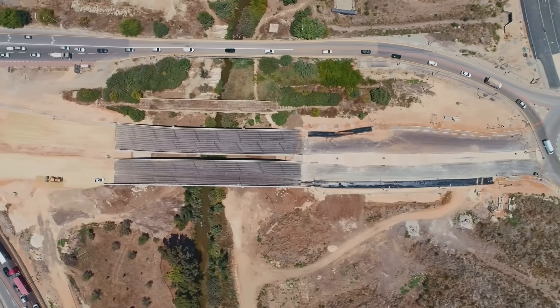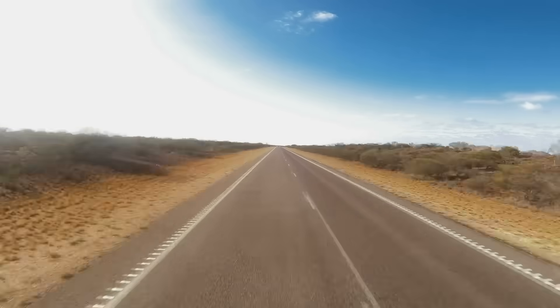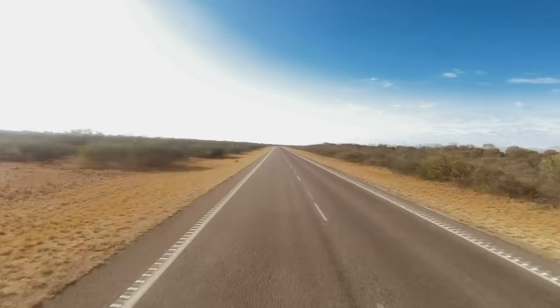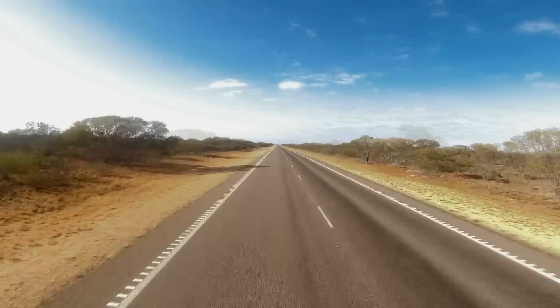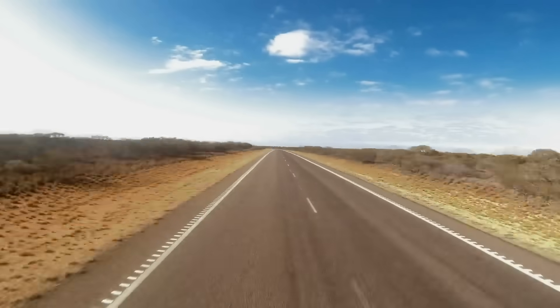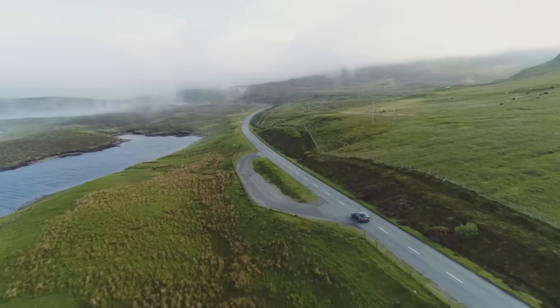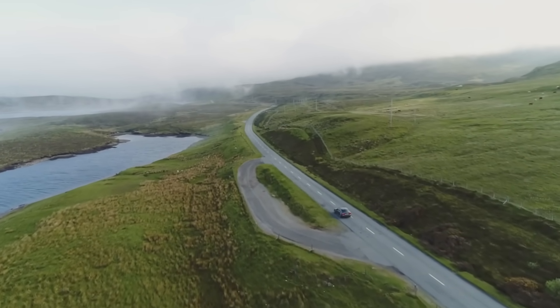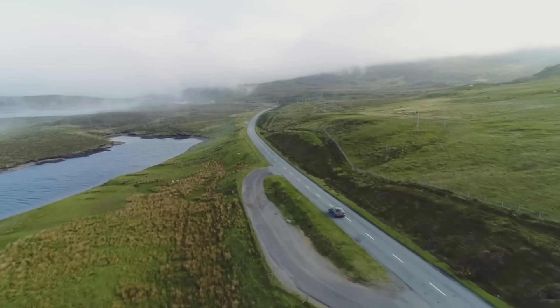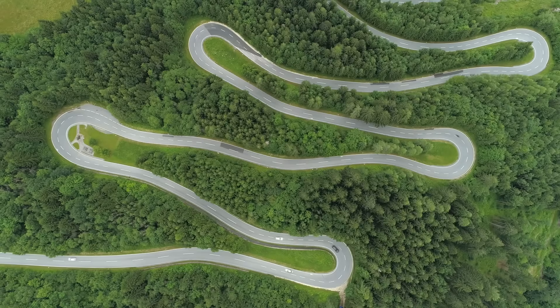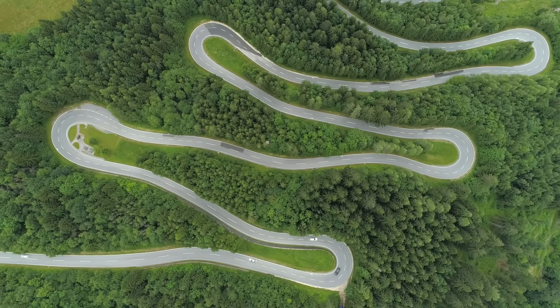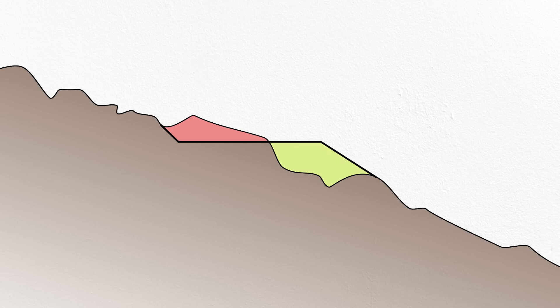Imagine you're designing a brand new roadway to connect point A to point B. It would be nice if the landscape between these points was perfectly flat, with no obstructions or topographic relief, but that's rarely true. More likely, on the way, you'll encounter hills and valleys, structures and streams, and you'll have to decide how to deal with each one. A roadway has to have gentle curves, both horizontally and vertically, so you might have to take some soil or rock from the high spots and build up the low spots along the way. That's called cut and fill.